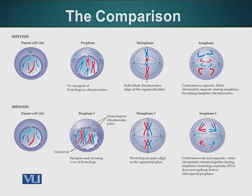In mitosis, in metaphase, the individual chromosomes line up at the metaphase plate. Here you can see in the metaphase of mitosis.